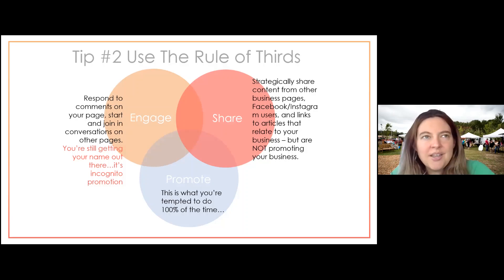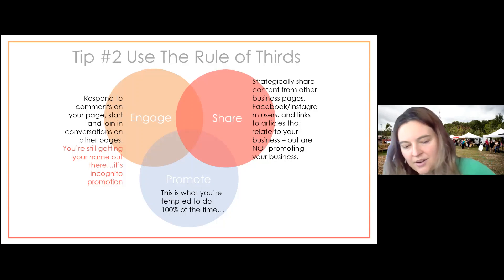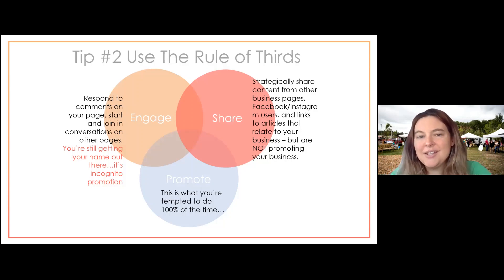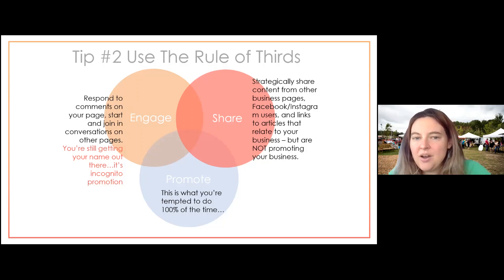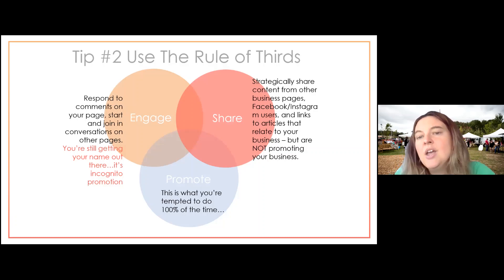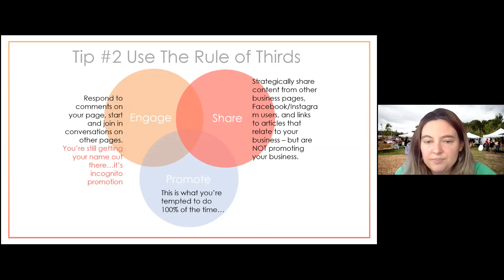No one knows the algorithms for Facebook and Instagram — it's all secret, and anyone who says they know is lying unless they work there. But there are a lot of theories that both Facebook and Instagram prioritize business pages that engage, because engaging and being active is using their products to the fullest. Facebook and Instagram want more engagement because they want more people to stay on these platforms. The more you are engaging and sharing and not just promoting, they may start favoring your page — theoretically, sharing more of your content because they see you're more active on social. That's the rule of thirds.